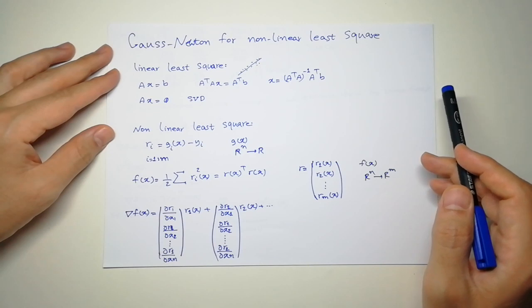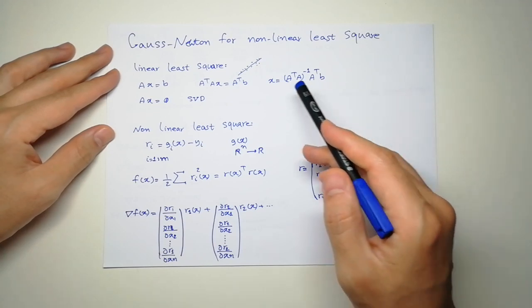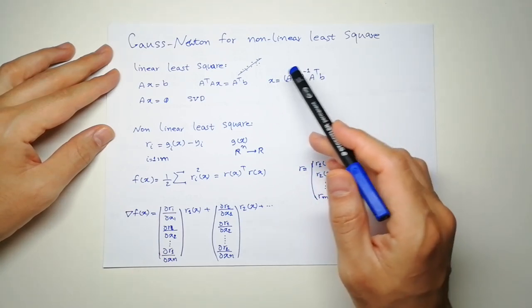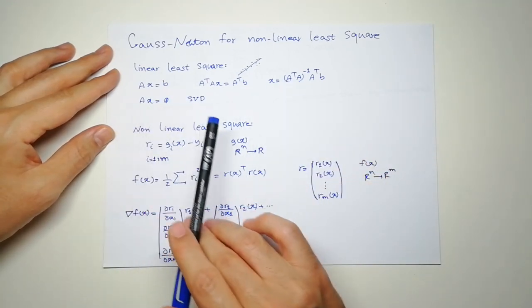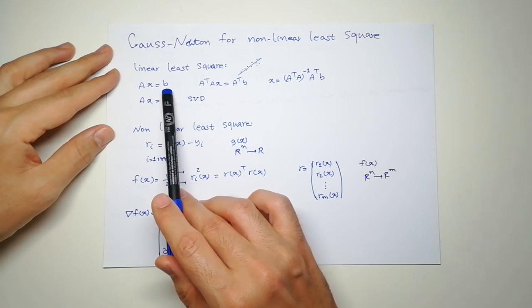Before we start, let's review linear least square. In linear least square, we have a bunch of data and we try to fit a line, plane, or hyperplane to them. We have linear equations in the form Ax equal to B or 0.